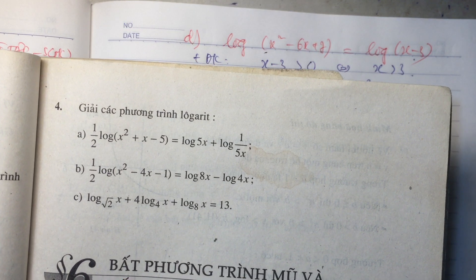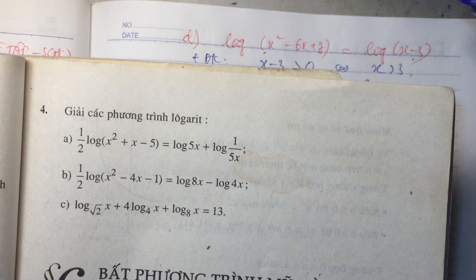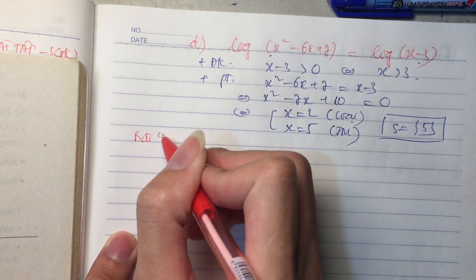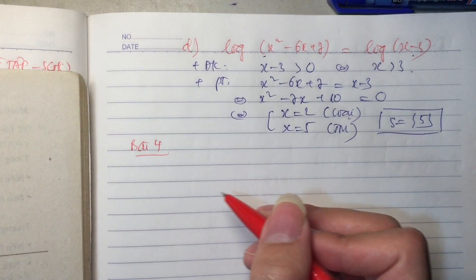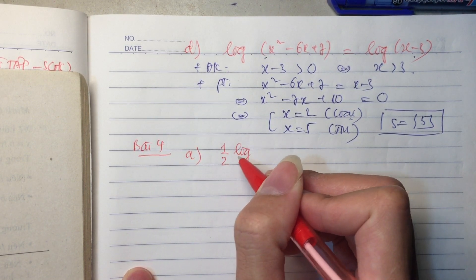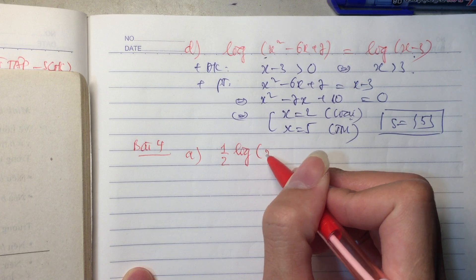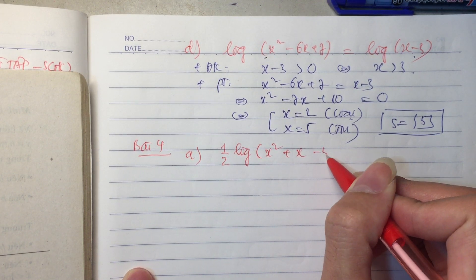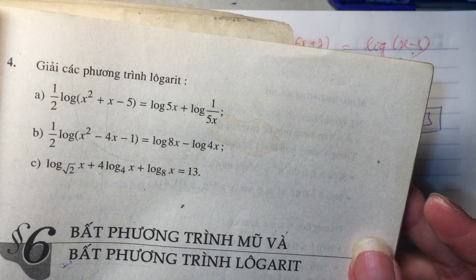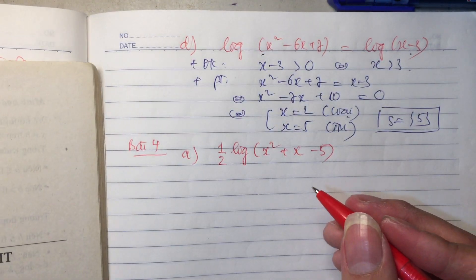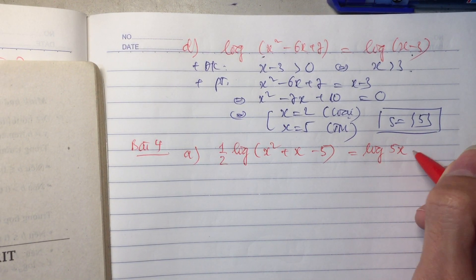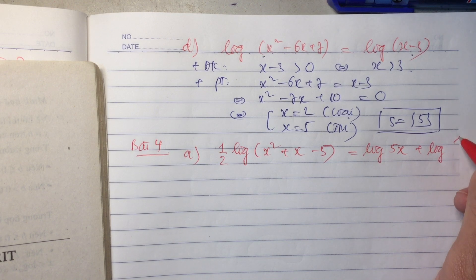Ta sẽ đến với bài tập số 4, có 3 câu. Bài tập số 4 ở sách giáo khoa trang 85. Câu A: giải phương trình 1 phần 2 log cơ số 10 của (x bình cộng x trừ 5) bằng log cơ số 10 của 5x cộng với log cơ số 10 của 1 trên 5x.